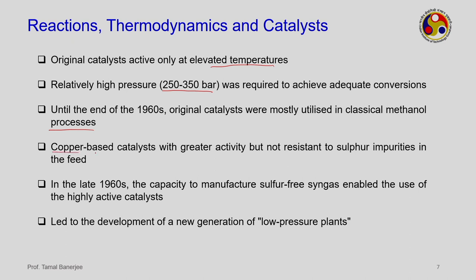The issue with high-activity copper-based catalysts is that they may not be resistant to the feedstock — syngas — which can contain sulfur, reducing catalyst activity. In the late 1960s, R&D led to the manufacture of sulfur-free syngas, enabling use of highly active catalysts. This led to the development of a new generation of low-pressure plants.